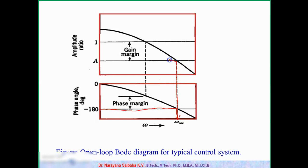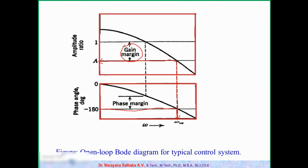At the crossover frequency, we draw a vertical line up until it touches the top curve, then draw a horizontal line to determine the amplitude ratio at the crossover frequency. So here we get this value A. Based on A, Bode stability criteria tells us: if A is less than 1 the system is stable; if A is greater than 1 the system is unstable. The gain margin is the difference between AR equal to 1 and the AR value at the crossover frequency — the difference between these two lines is the gain margin.